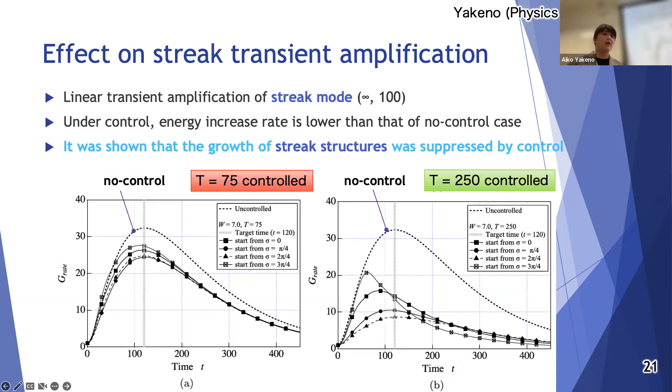The weakening of the streak structure will suppress secondary instability, and as a result streamwise vortex, which is the main cause of drag, would be less likely to occur.